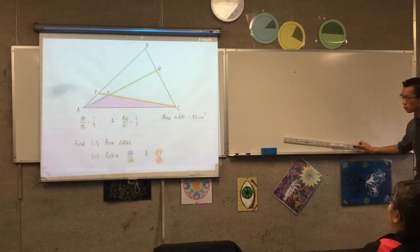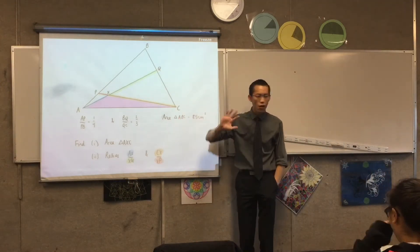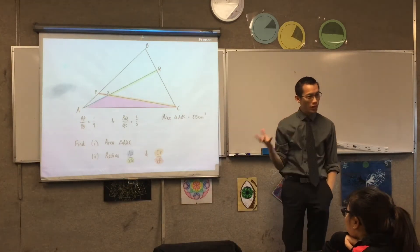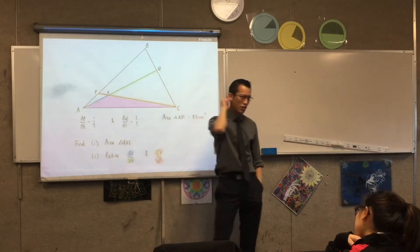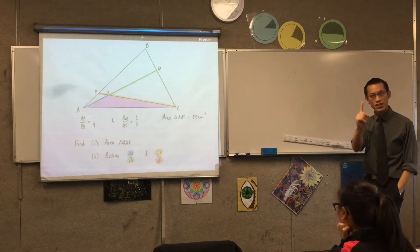So with just a straight edge, and if you wanted to, we don't need one today, a compass, you can know a heck of a lot about something and be able to understand it very comprehensively. So within this triangle, right, you can see they popped in these extra constructions and then they give you some ratios and a single measurement.